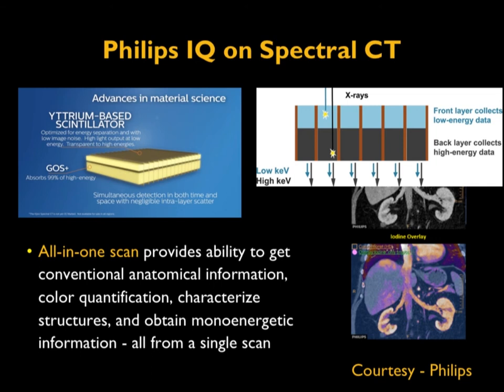The advantage of this approach is that it is an all-in-one scan, providing the ability to conveniently obtain conventional anatomical information and color-coded data in a single scan. Instead of a single-layer detector, a dual-layer detector separates the x-ray spectrum into low and high energy, which can be combined together to reconstruct monoenergetic x-ray images.